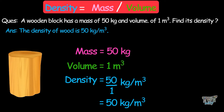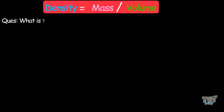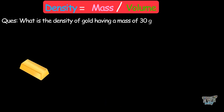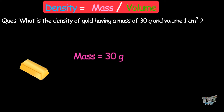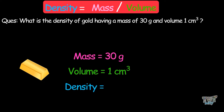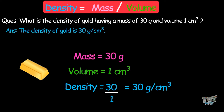Here we have another example. What is the density of gold that has a mass of 30 grams and a volume of 1 cubic centimeter? Density is mass divided by volume, so density is 30 divided by 1, which equals 30 grams per cubic centimeter.